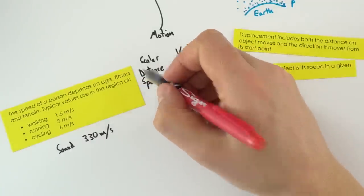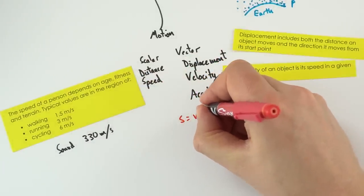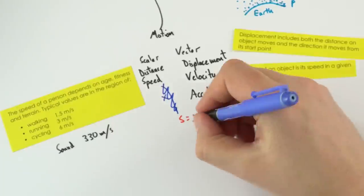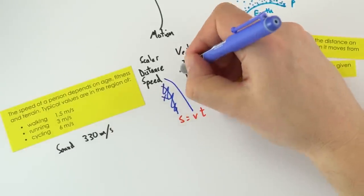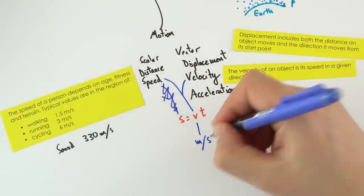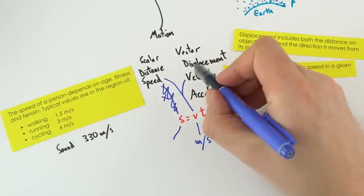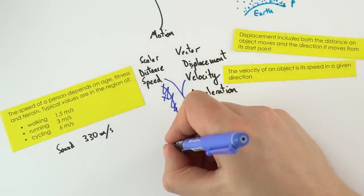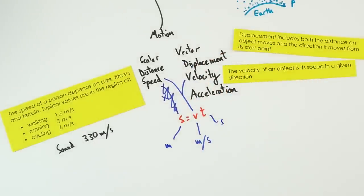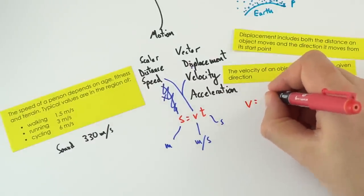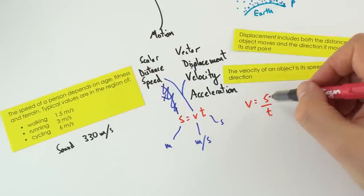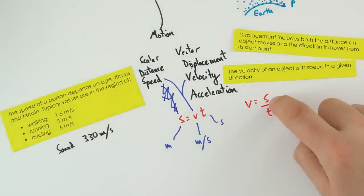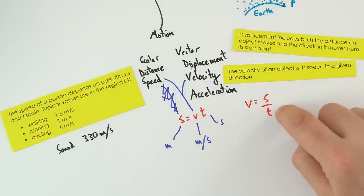For the relationship between distance and speed: s = vt. Note that we don't use 's' for speed — instead we use 'v' for speed or velocity in metres per second, while 's' stands for displacement or distance in metres, and t is time in seconds. More usefully, v = s/t, so speed equals distance divided by time.